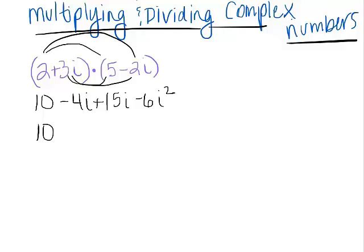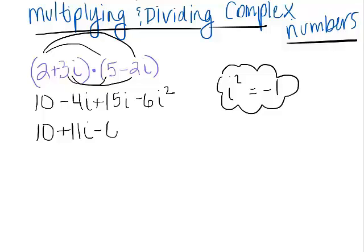Negative 4i plus 15i, those are like terms, and that gives us positive 11i. Negative 6i squared can also be simplified. Remember from a previous video that i squared is equal to negative 1. It's a very important fact when we are working with imaginary and complex numbers.